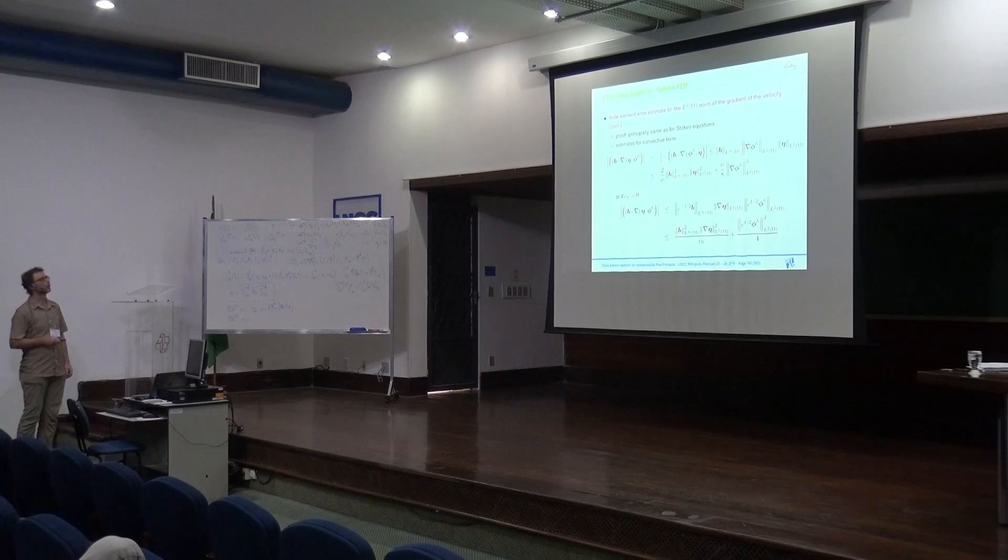Again, I can show it here quite shortly. How does it work? It's just below. The first estimate is the same as for the Stokes equations. Again, one can use that the convective term vanishes. So, that means on the left-hand side, one gets just these two norms. This can be estimated by the dual norm and by Young's inequality in order to give this first estimate.